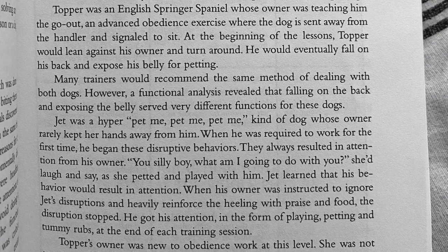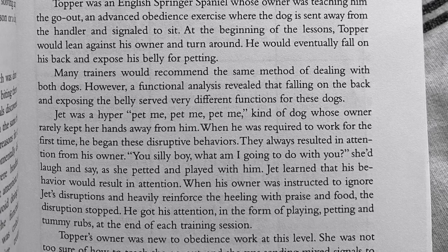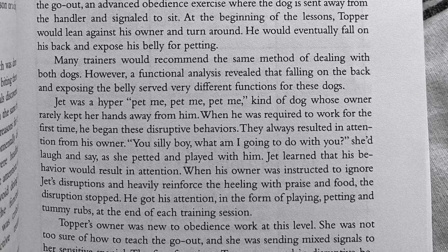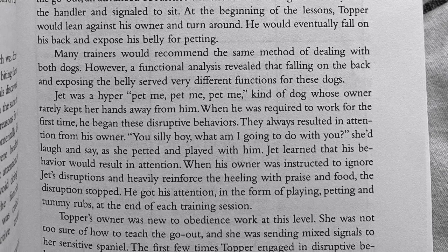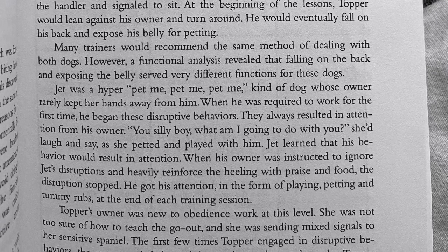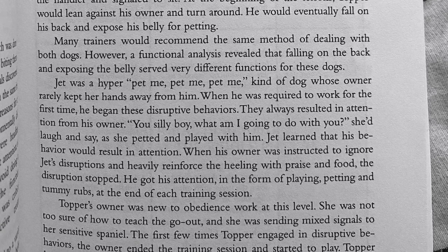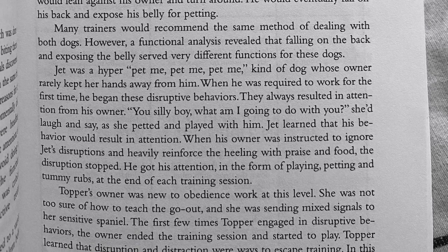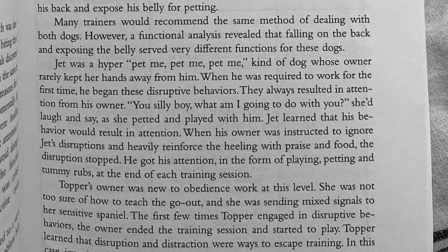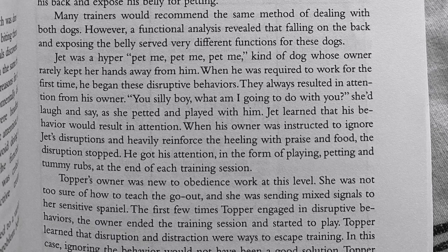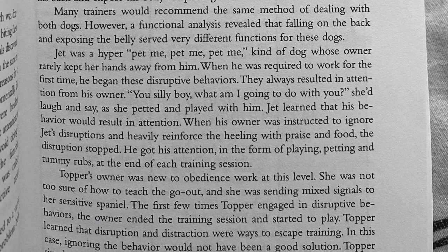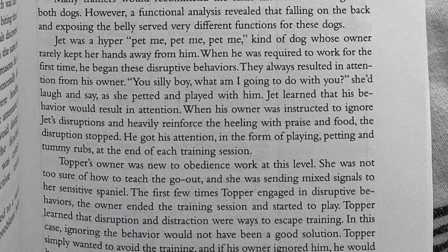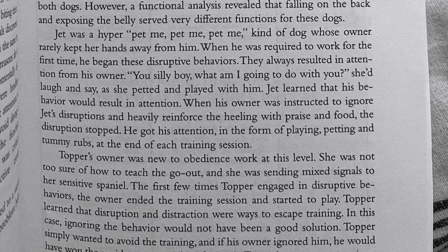Topper was an English springer spaniel whose owner was teaching him to 'go out' — an advanced obedience exercise where the dog is sent away from the handler and signaled to sit. At the beginning of the lesson, Topper would lean against his owner and turn around, eventually falling on his back and exposing his belly for petting. A functional analysis revealed that falling on the back served a very different function for Topper. He simply wanted to avoid training, and the first few times he was disruptive, the owner ended the session and started to play. Ignoring the behavior would not have been a good solution. The solution was to continue the lesson, give reinforcement for close approximations to the behavior, and use gentle physical guidance as necessary.